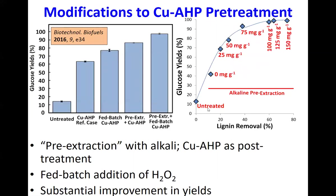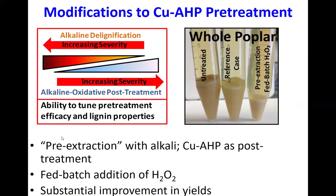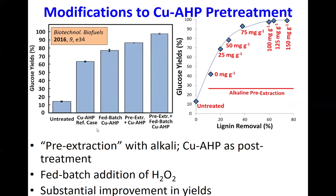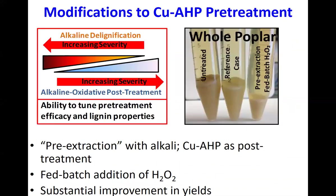We've also improved the process by looking at fed-batch addition of hydrogen peroxide, including a separate alkaline pre-extraction step, and combining these for much better sugar yields — correlating improving sugar yields with improving lignin removal. For this two-stage process — an alkaline treatment followed by a copper AHP treatment step — we wanted to understand how much lignin you remove in each step, how that impacts process economics, and how it impacts lignin properties and potential co-product value.